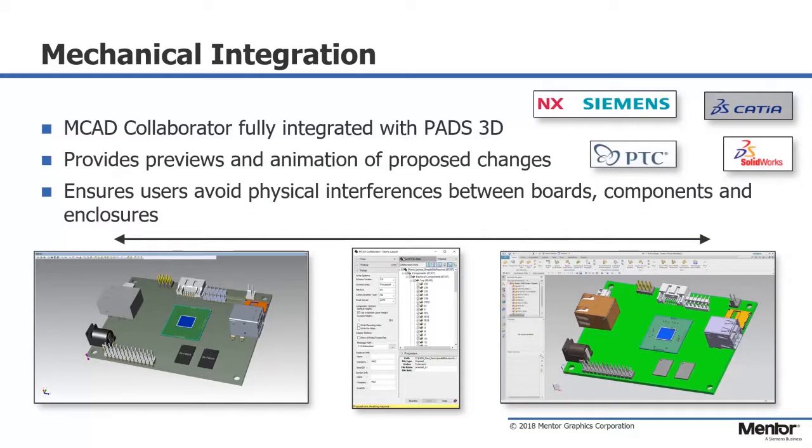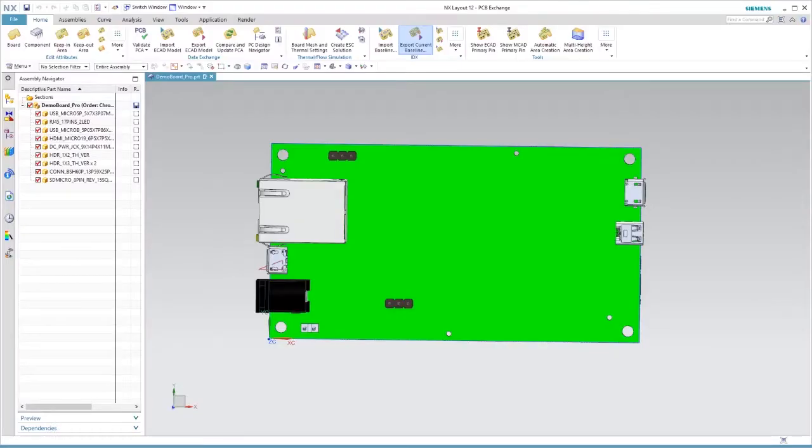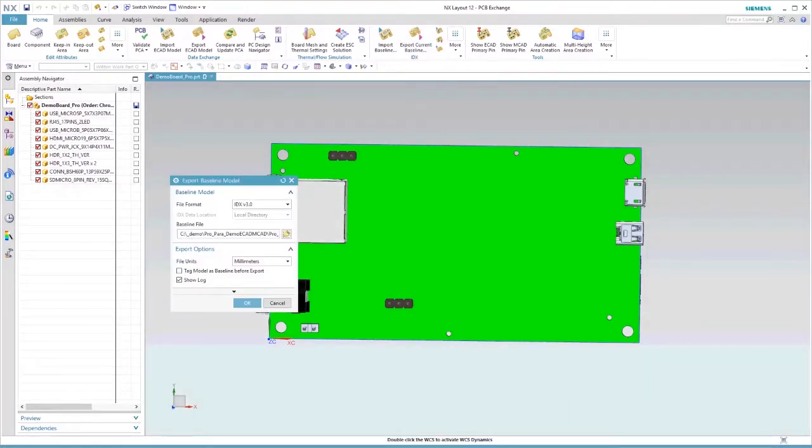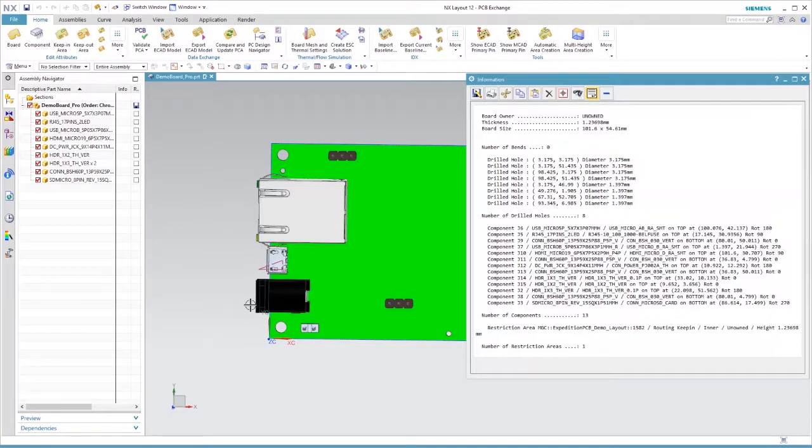Next, MCAD integration. So don't throw the design over the wall. Instead, use a structured method for accepting and rejecting engineering change orders between your mechanical, electrical, and PCB design engineers. With Siemens NX integration, we can start with a baseline being sent from the MCAD side with the board, mounting holes, and connector placement. This collaboration could also start from the ECAD side as well.